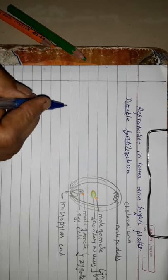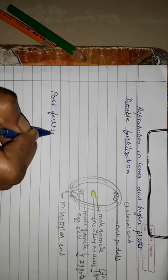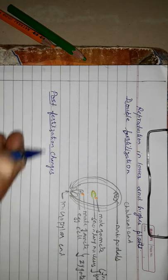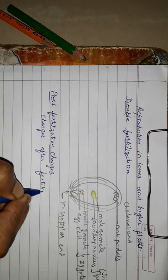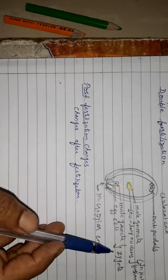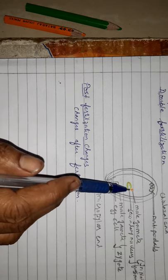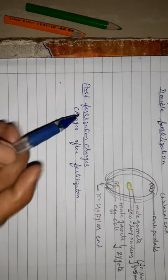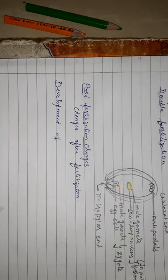Now we are going to study post-fertilization changes - changes after fertilization. What is the change? Zygote is formed, endosperm is formed. We are going to study endosperm first, because endosperm is one of the nutritive tissues which provides nourishment to the developing zygote. So, development of endosperm.